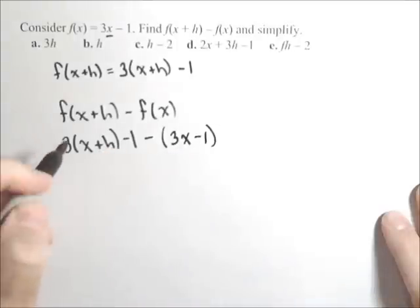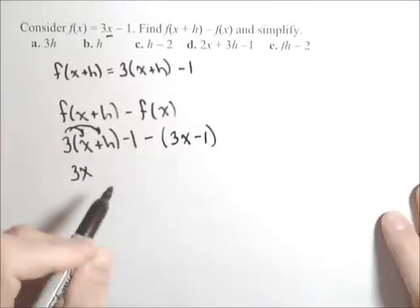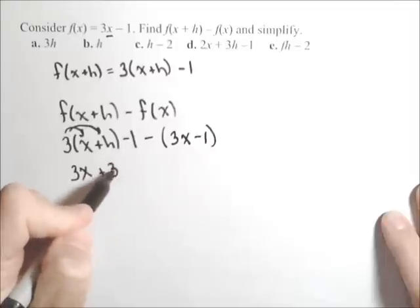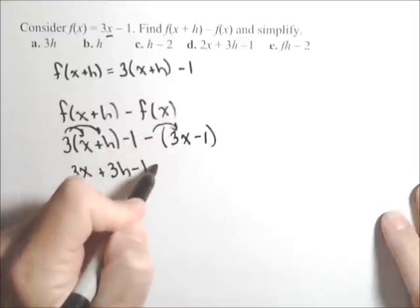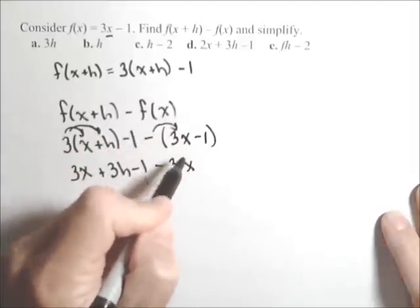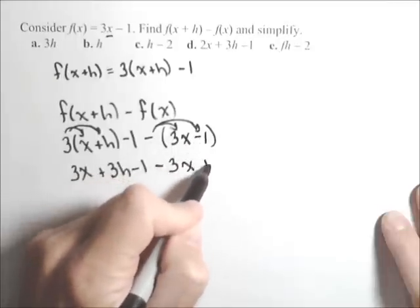Now we simplify. We're going to distribute the 3 here, so 3 times x is 3x, plus 3 times h is 3h, minus 1. Then we'll distribute the negative, so minus 3x, and that negative times a negative 1 is a positive 1.